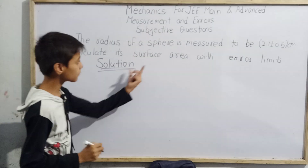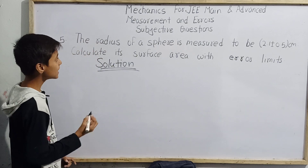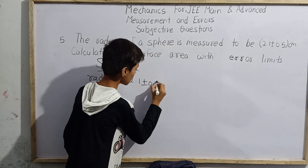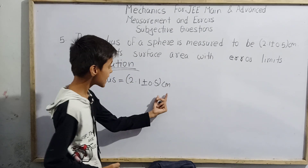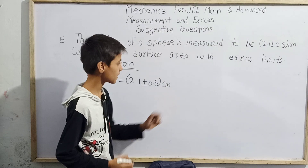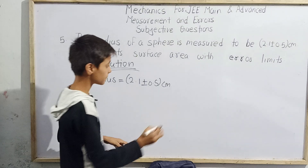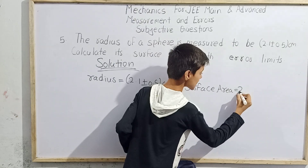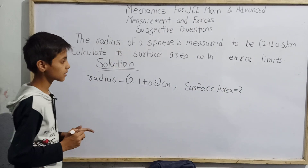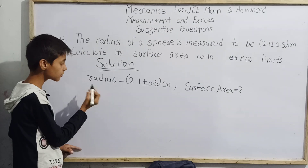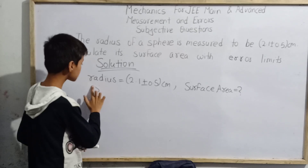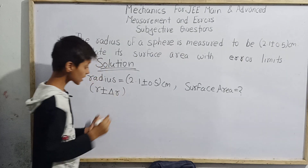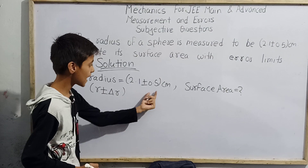First we need to know what we have to calculate — we have to calculate the surface area. The data given is the radius of a sphere. Radius equals 2.1 plus minus 0.5 centimeters. The radius is of the form r plus minus delta r, where r equals 2.1 and delta r equals 0.5.